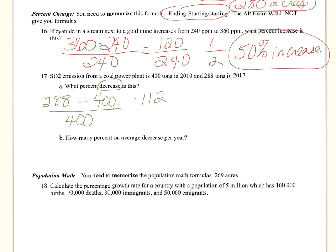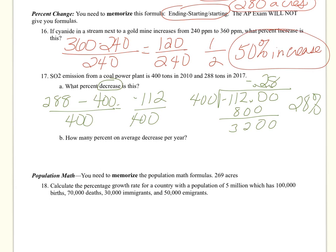So negative 112 divided by 400. And so 400 goes into negative 112. Here's our decimal. Bring it up. Add a zero. This goes in twice. Two times 400, we subtract. And we have a remainder of 320. Add a zero. Bring it down. Oh, it looks like it goes even. 400 goes into 3200 exactly eight times. And so this is a minus. So we declined by 28%. So this is a 28% decrease. When you come out with a negative number, it's a percent decrease.